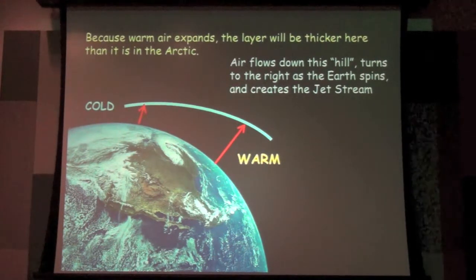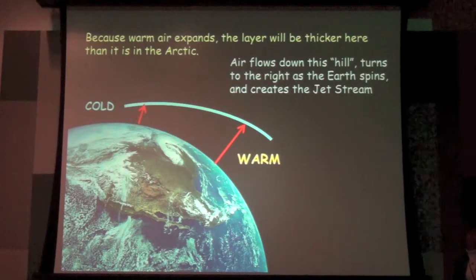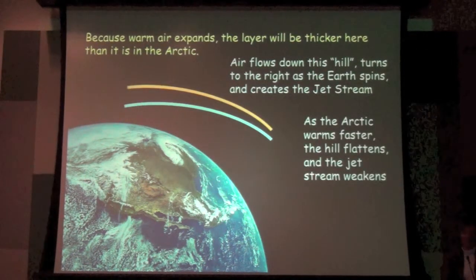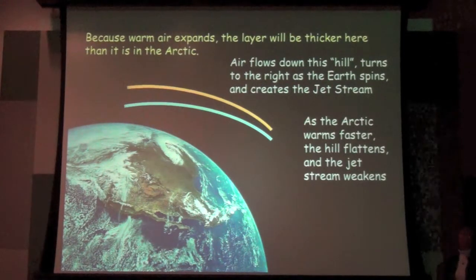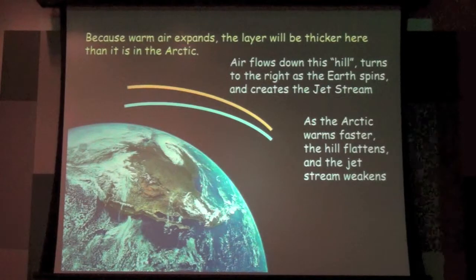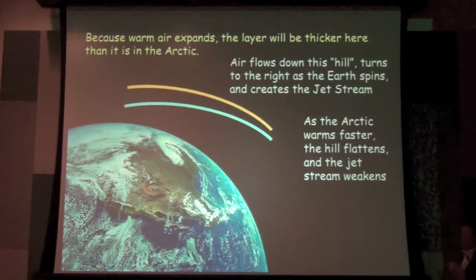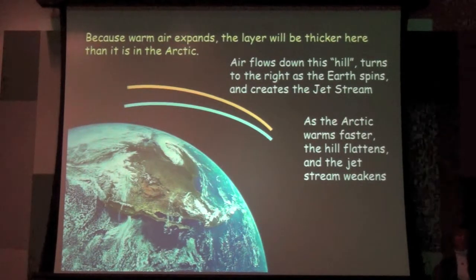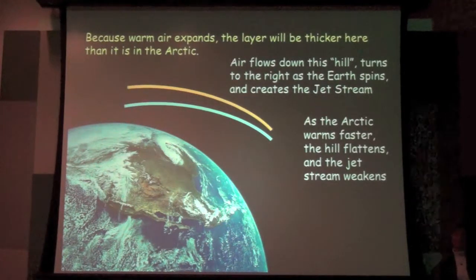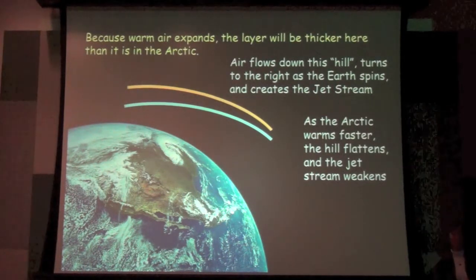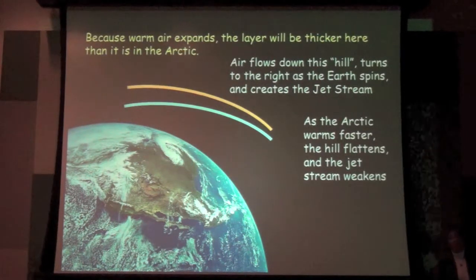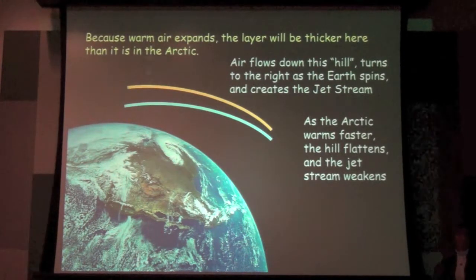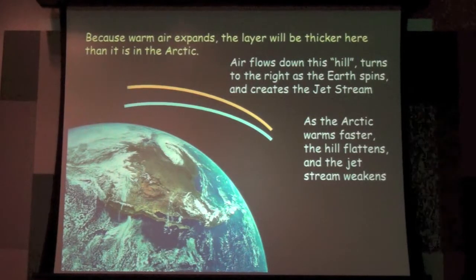Now remember back to Arctic amplification. We're warming the Arctic faster than we're warming the air here in Detroit. That means the thickness of that layer is increasing more in the Arctic than it is here. In effect it's making that hill less steep. That hill is what drives the winds of the jet stream. So if you make that hill less steep you're making the force that drives those winds weaker and you're weakening the winds of the jet stream.